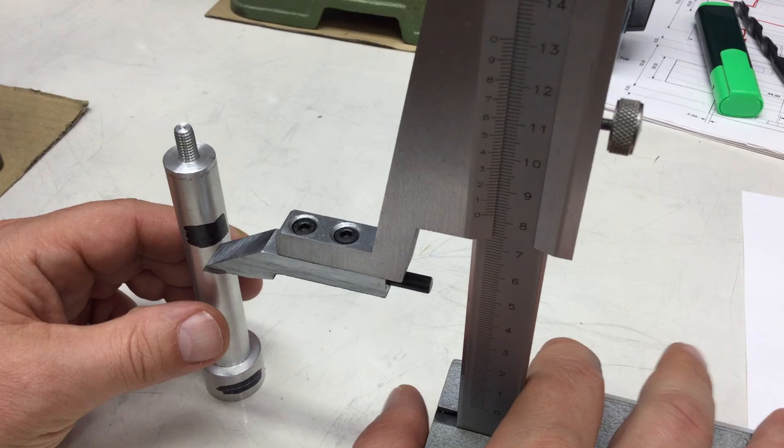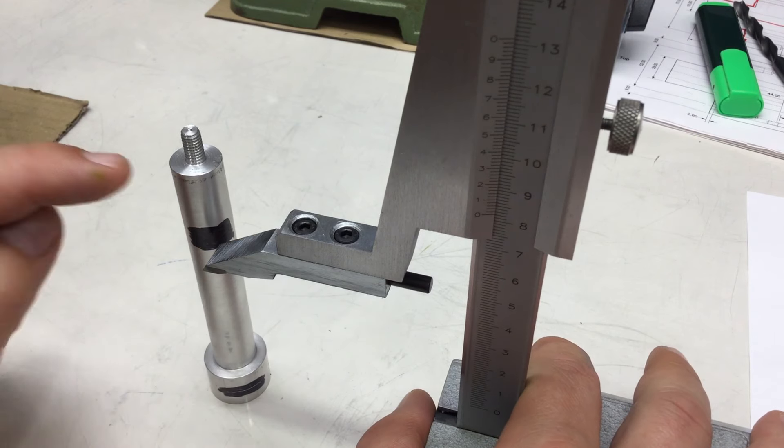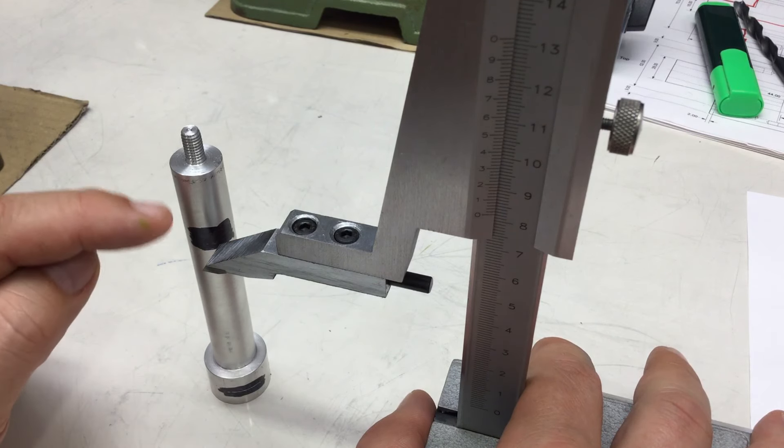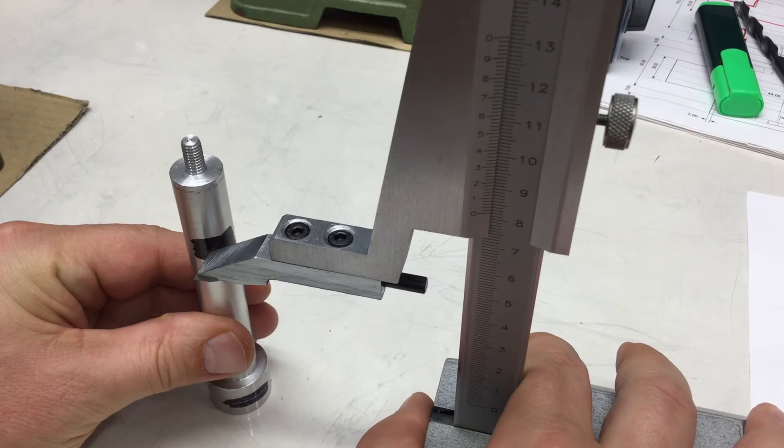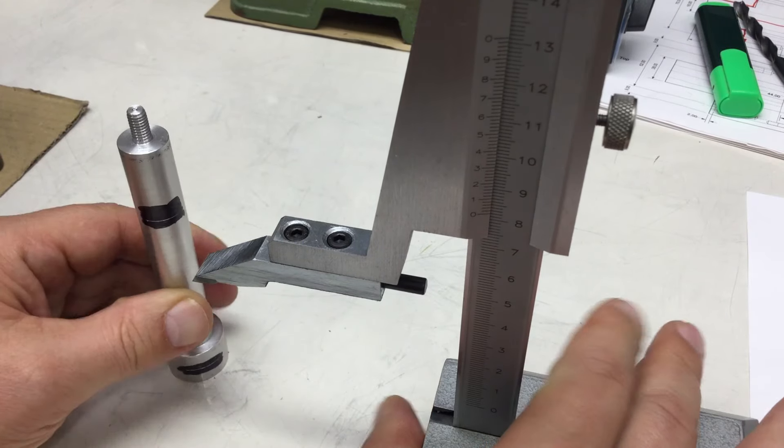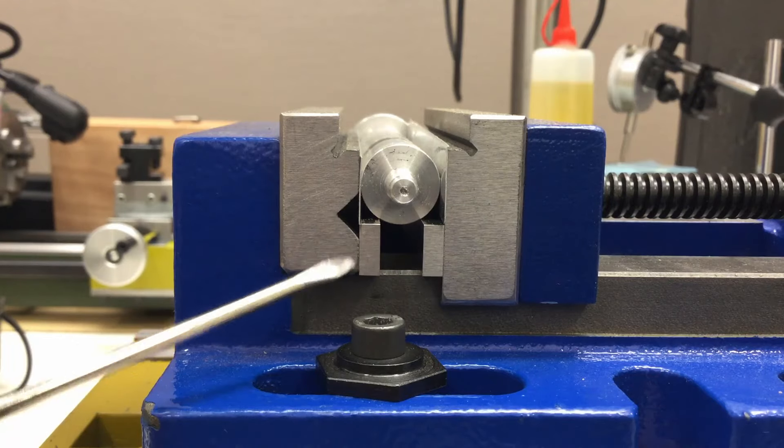I'll scribe a second line here at 82.5 so that should give me here the length of 25 plus 2.5 for the radius.